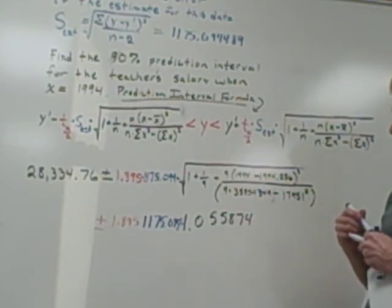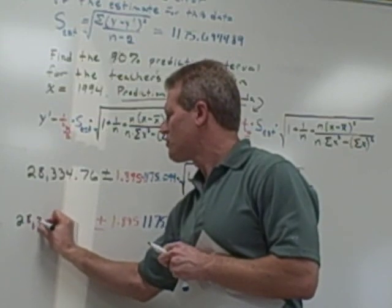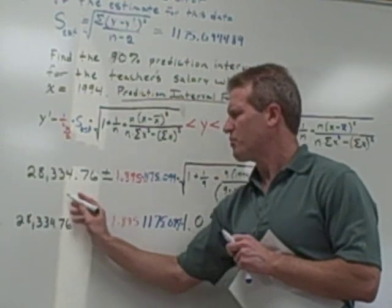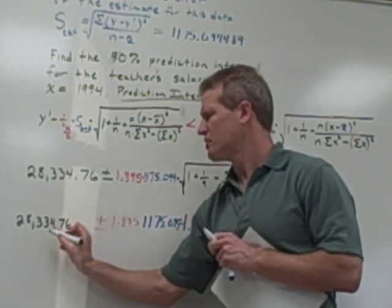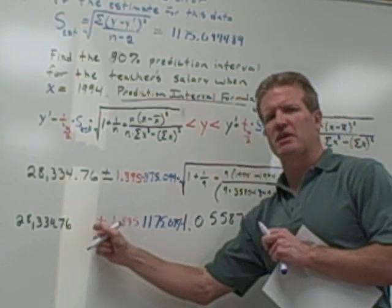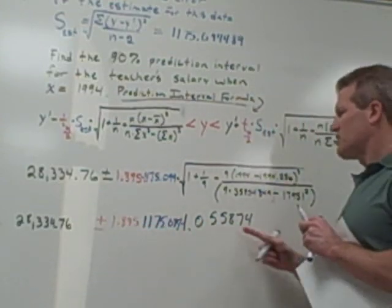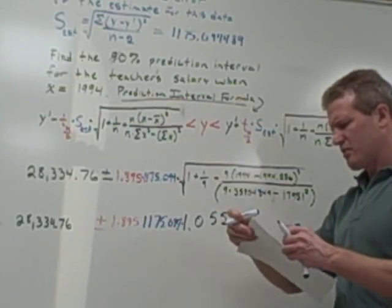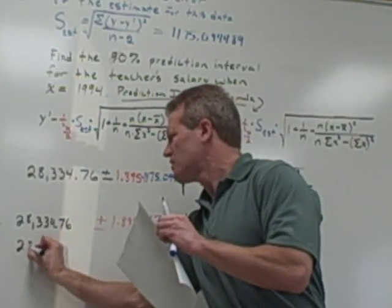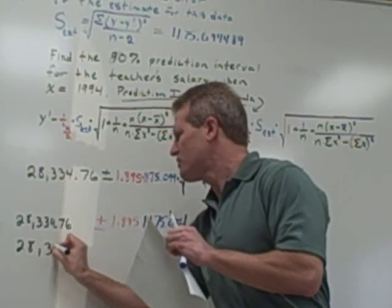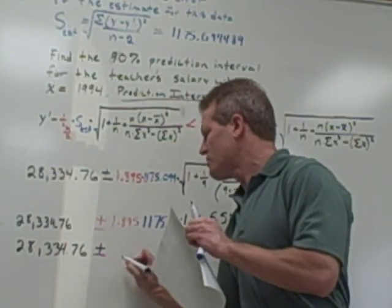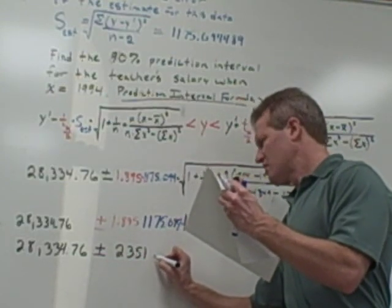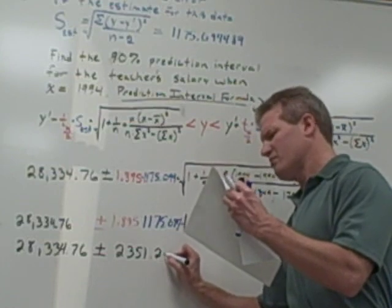So I would still have the 28,334.76 here. This is my predicted amount, my point estimate or point prediction. This is going to give me my error, my possible error. So I type this in the calculator, the 1.895 times this value times this value, and I come up with $28,334.76 plus or minus my error, which comes out to $2,351.225.